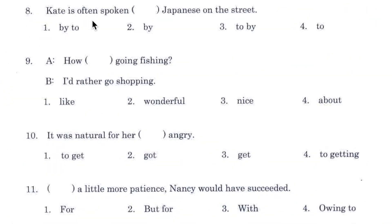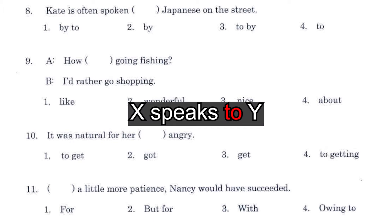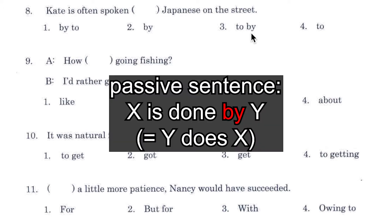Number 8. 'Kate is often spoken by to / by / to buy / to, Japanese on the street.' The answer is 'to by'. Kate is often spoken to by Japanese. The preposition 'to' is necessary because we say 'person X speaks to person Y', and 'by' is necessary because this is a passive sentence, and 'Japanese' expresses the doer of the speaking action.